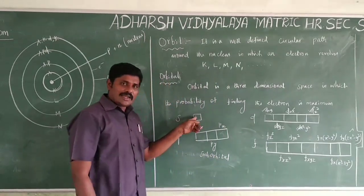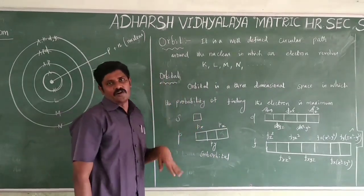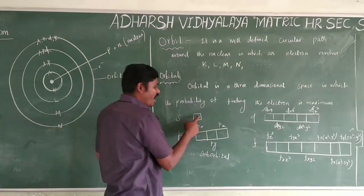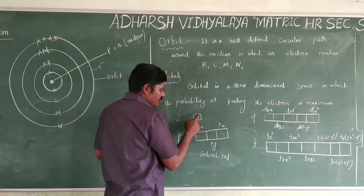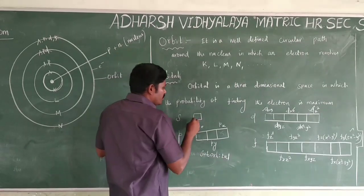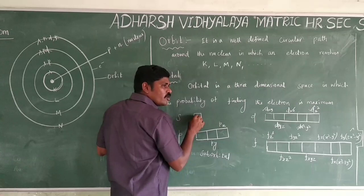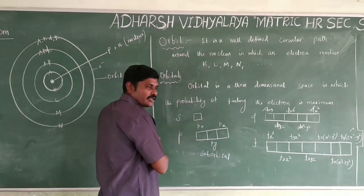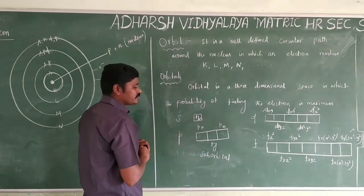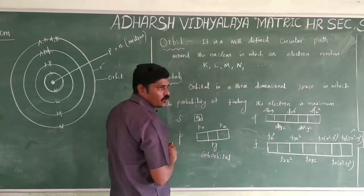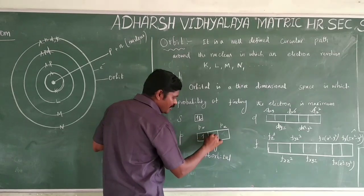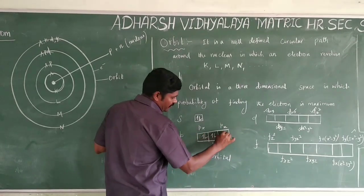Each orbital contains two electrons. According to the Pauli exclusion principle, each electron revolves in the opposite spin direction. According to Hund's rule, the sub-orbitals are first filled with unpaired electrons before pairing up.